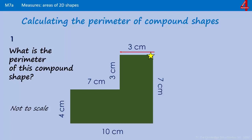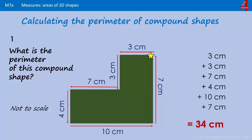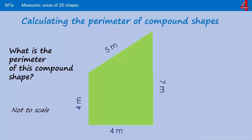I always do a little star to mark where I've started so that I don't accidentally count that bit again. That's three centimeters, add on another three centimeters, add on seven centimeters, add on four centimeters, add on ten centimeters, and finally seven centimeters — and I'm back to where I started. The perimeter of that shape is 34 centimeters.